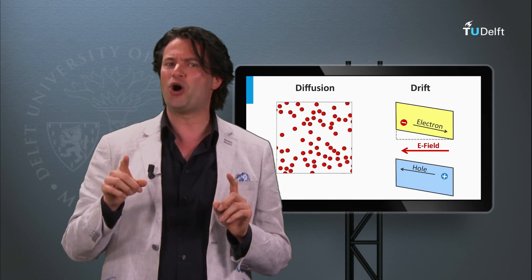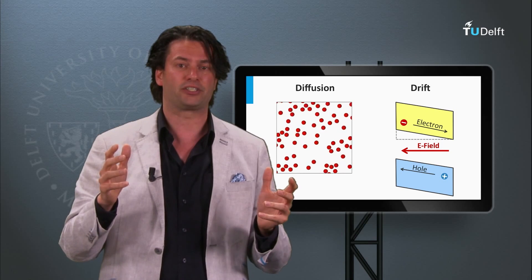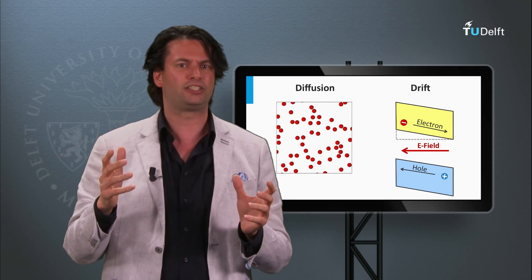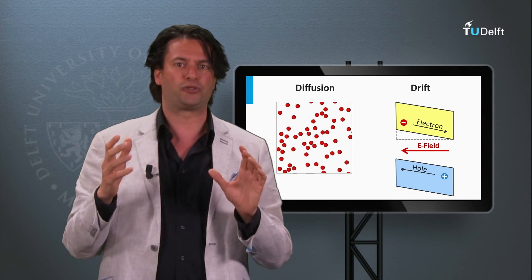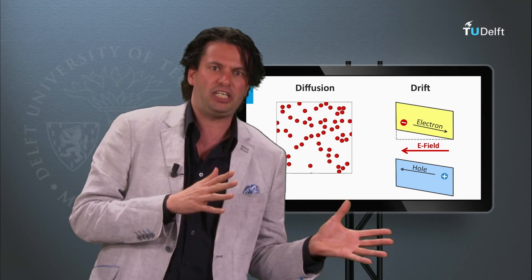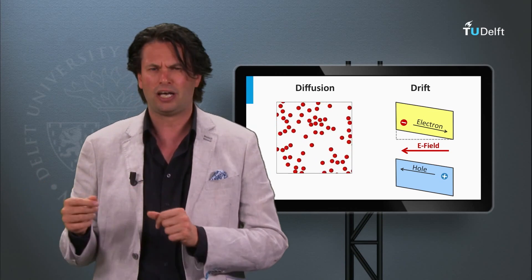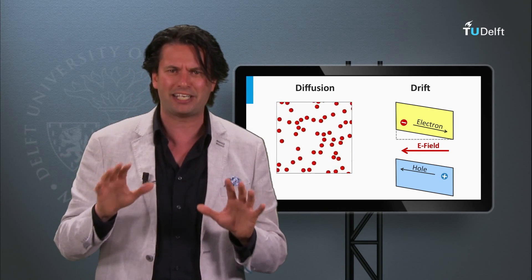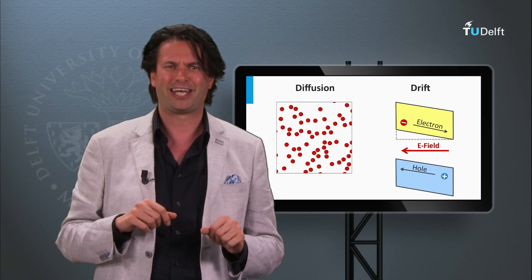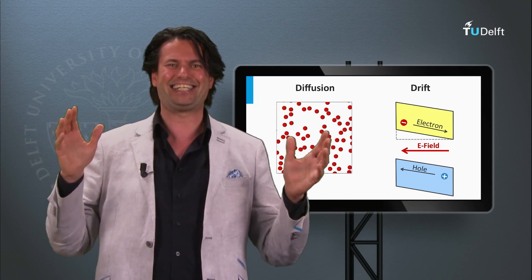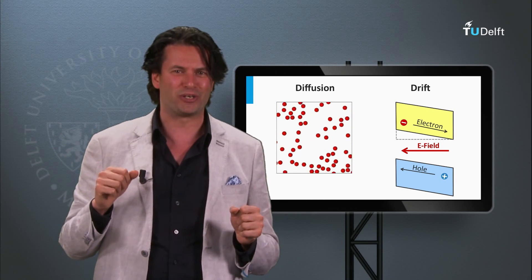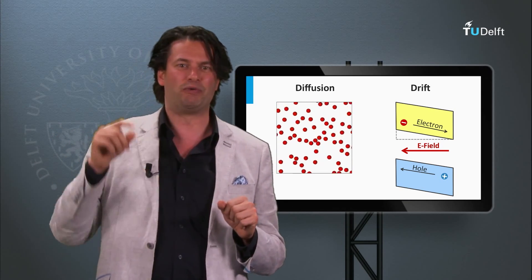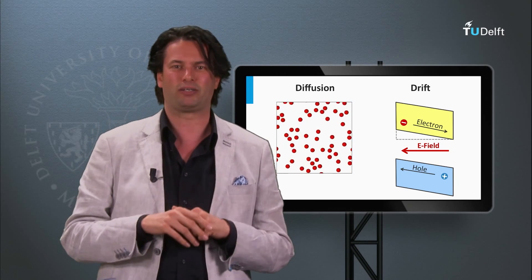Now we know how to excite charge carriers, how to manipulate semiconductor material to create majority and minority charge carriers, and we understand the transport mechanisms of charge carriers. It is time to build a solar cell using these tools. We will do that in the next block.